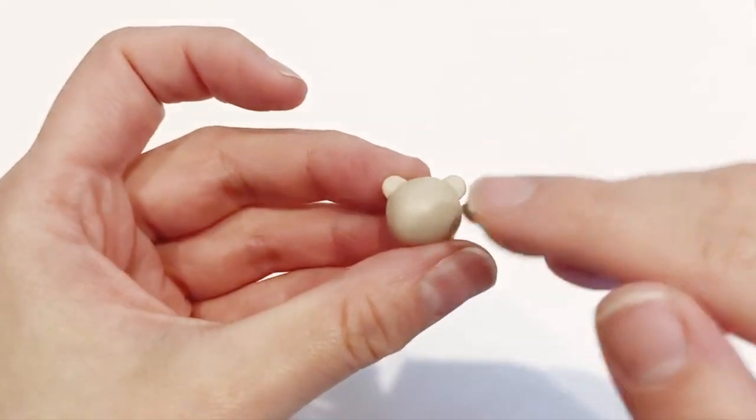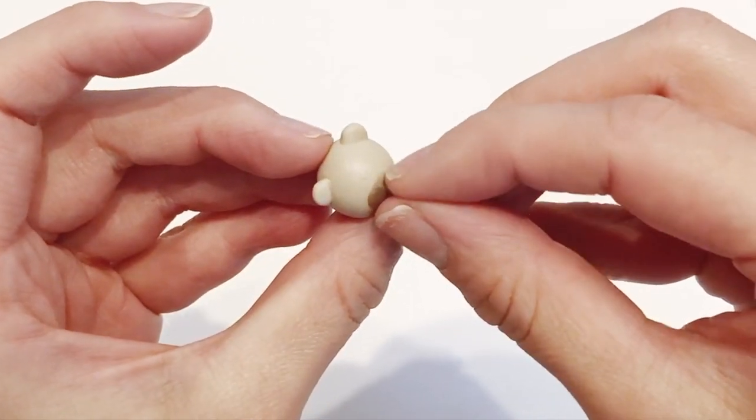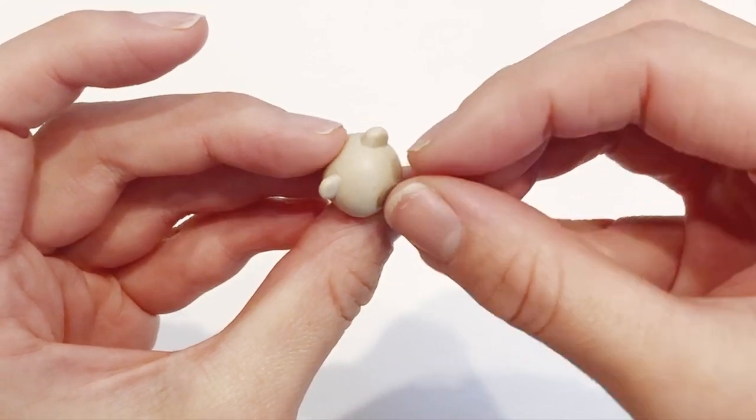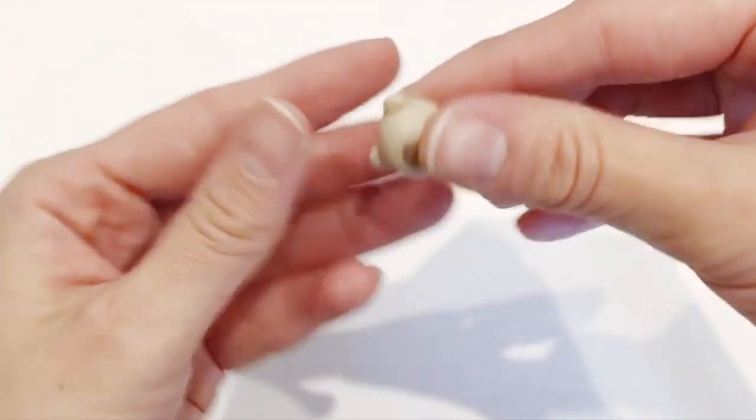For the snout, I'm taking a darker piece of brown clay. I'm rolling it into a tiny little oval and flattening it on the front lower part of the face. I really wanted to make it centered and focusing mostly on the lower part and just kind of flatten it out.